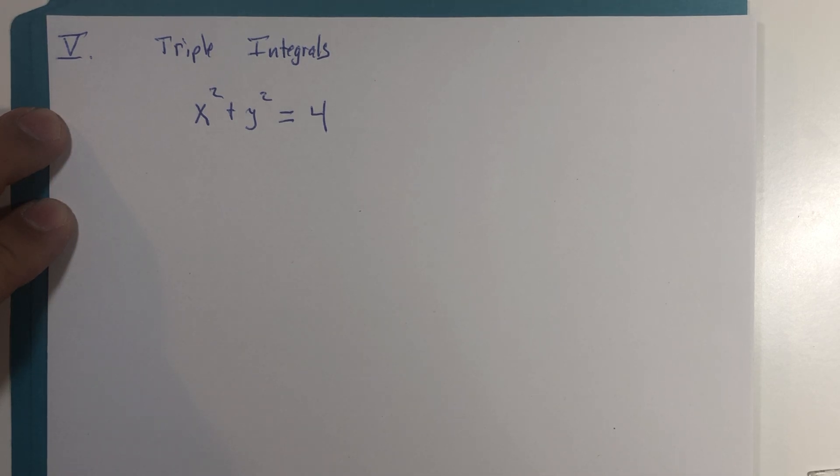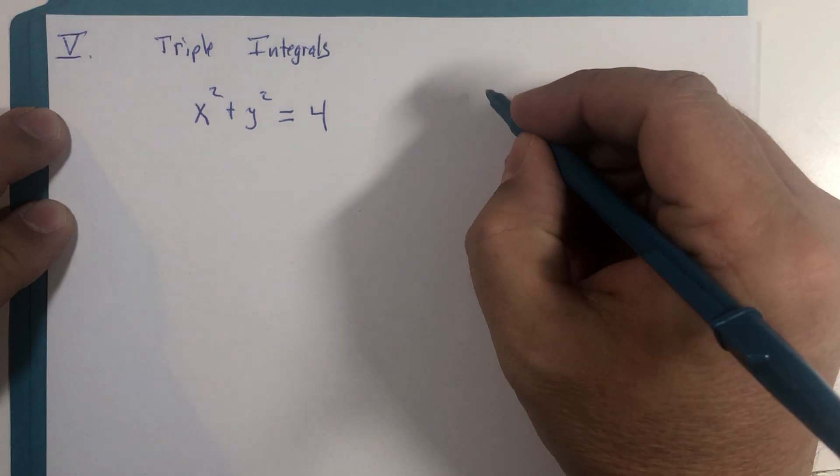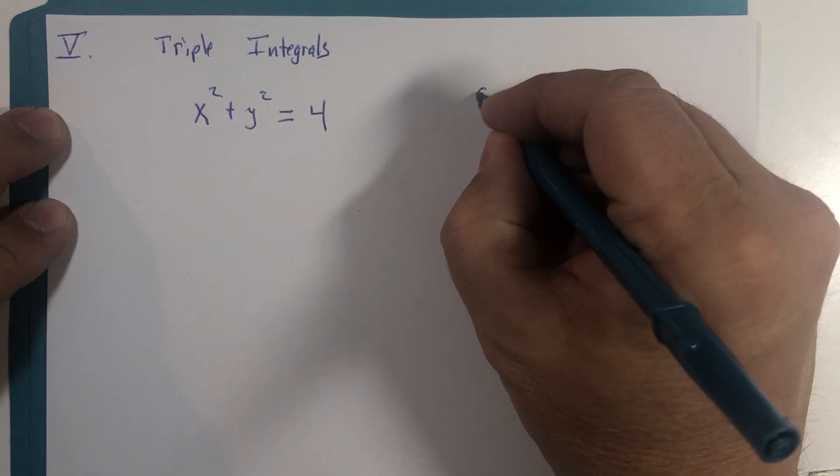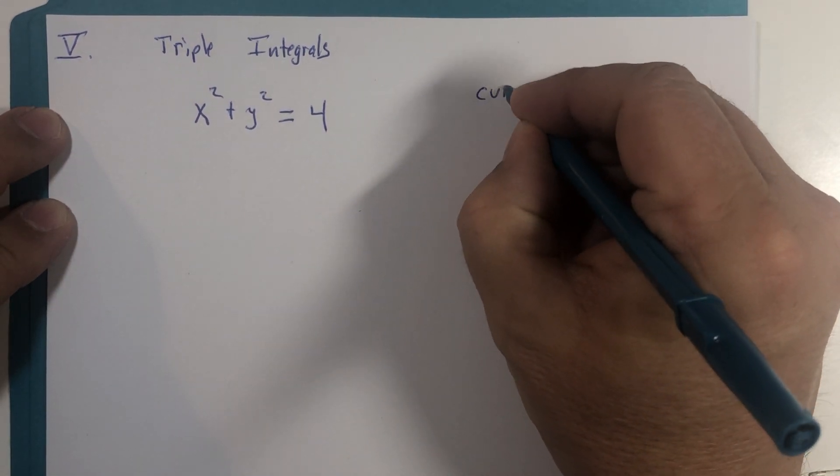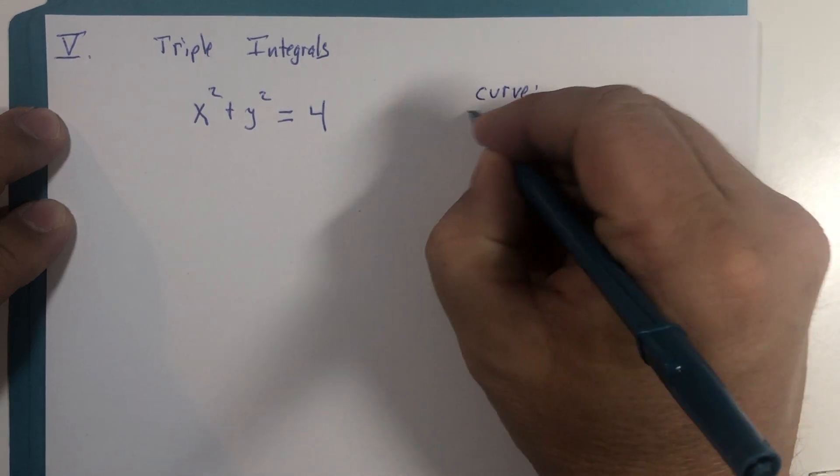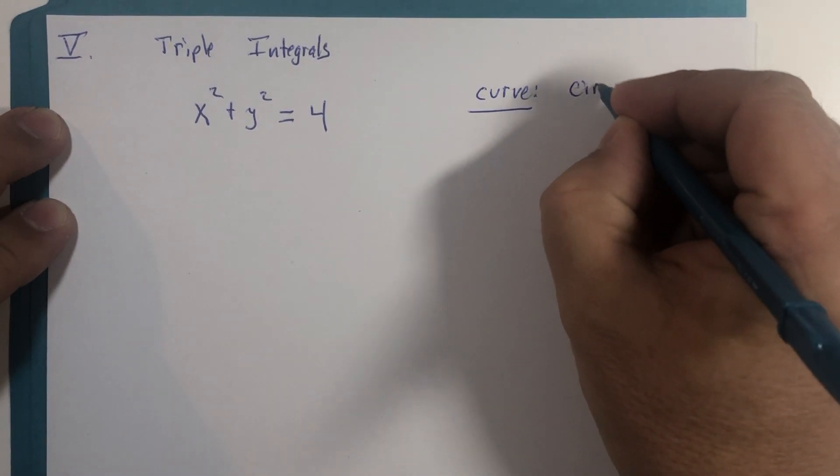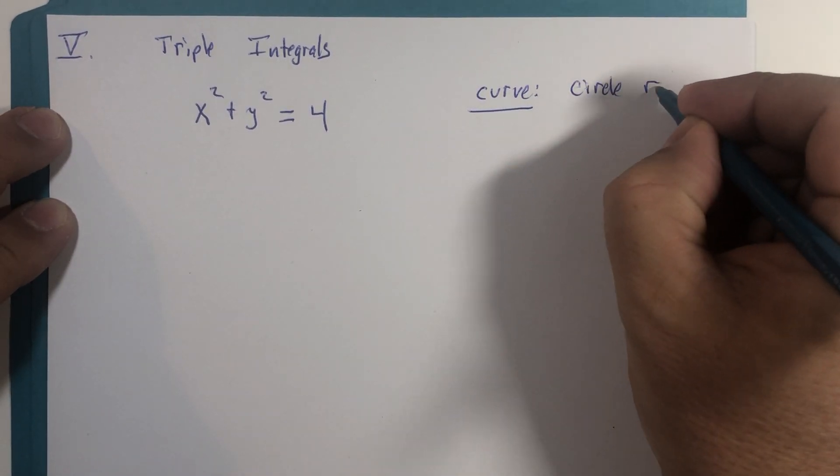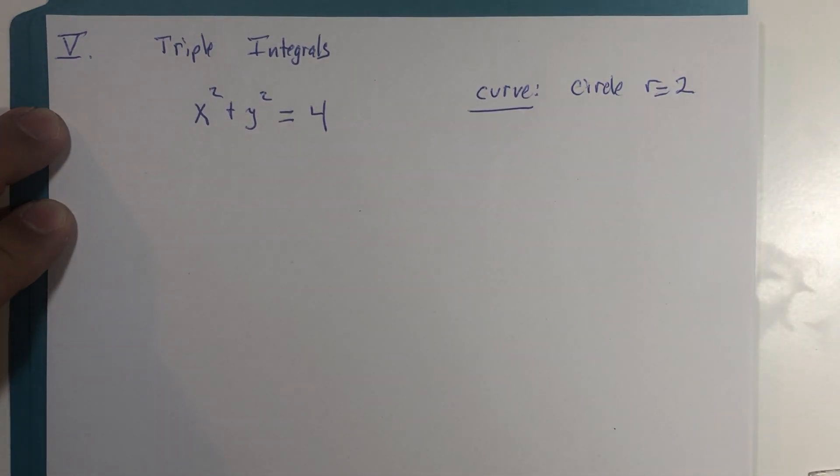Well, in two dimensions, you are right. If this would be a curve, then we certainly are looking at a circle with radius that is two units.